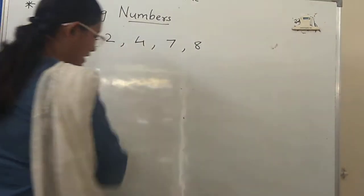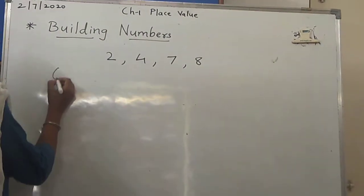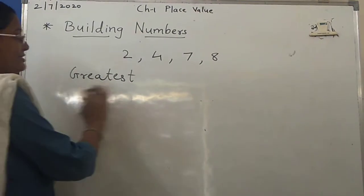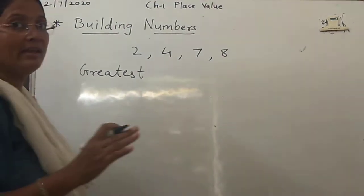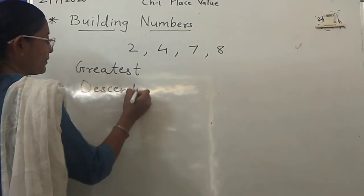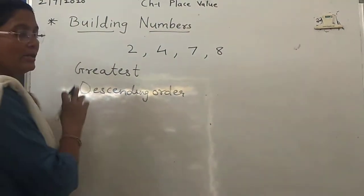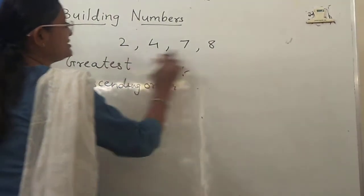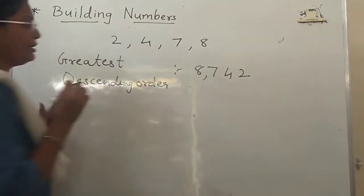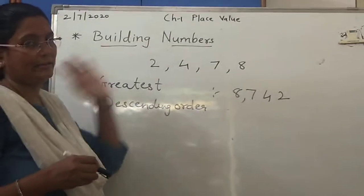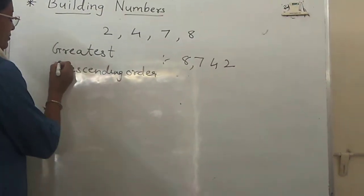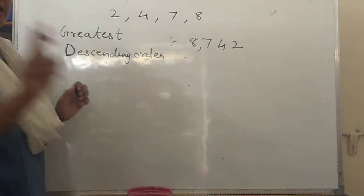Now, if I tell you to build the greatest number using these 4 digits, then what do we have to do? Greatest means we have to keep these digits in descending order — big to small. So the biggest digit is 8, then 7, then 4, then 2. So 8742 is the greatest number built from these digits. By arranging the digits in descending order, we can build the greatest number.